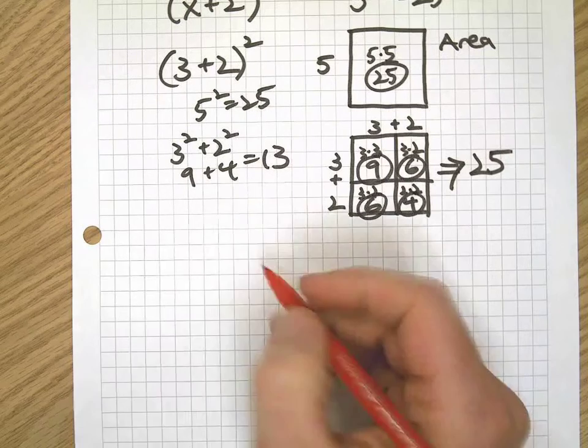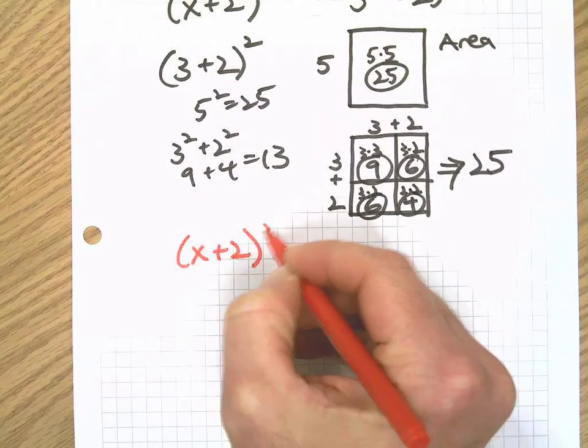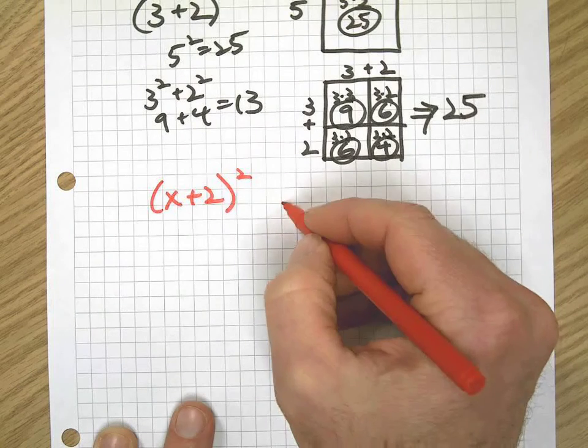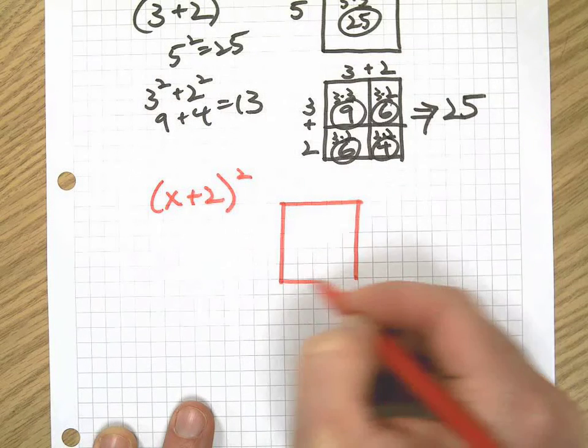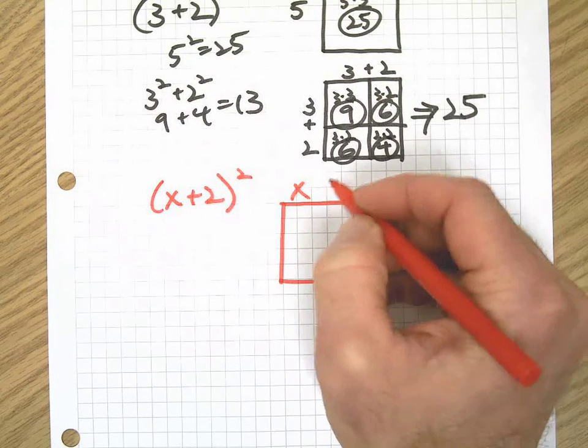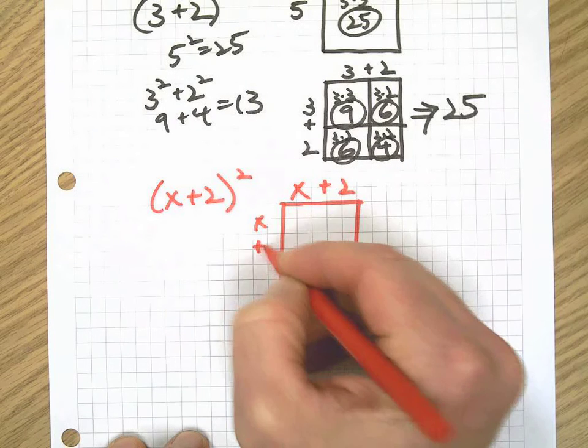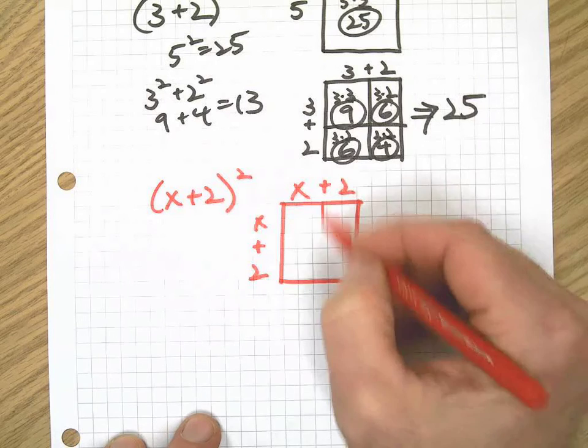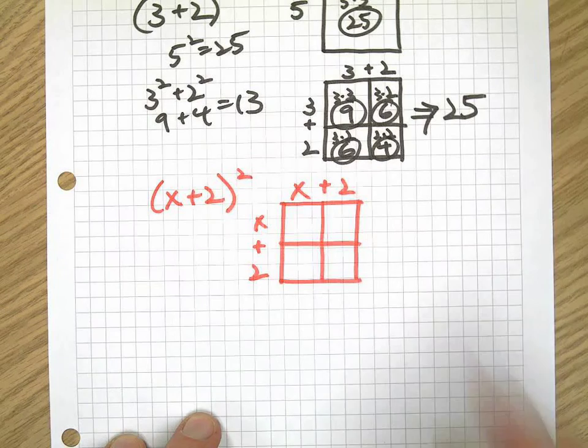Now let's go to our example here. Let's take x plus 2, our binomial, and let's square it using a rectangle model. One side is going to be x plus 2, and the other side is going to be x plus 2. After all, we're squaring it, right? We're making a square. Two sides are the same. Let's split up that rectangle, or the square in this case.